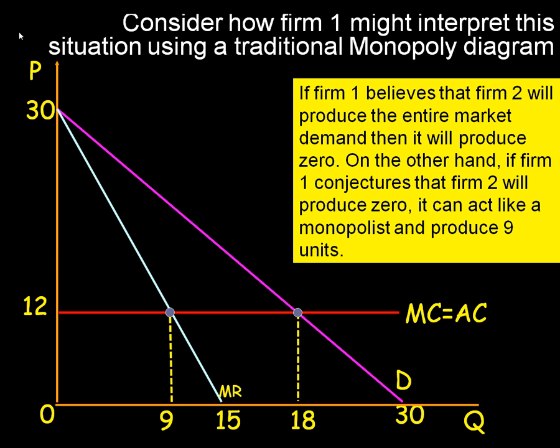We really ought to get an idea of how we might interpret this situation diagrammatically, and that's the purpose of this slide. Here I've drawn a traditional monopoly diagram, based upon how firm 1 might interpret the situation. Imagine you're firm 1, faced with a demand curve of price equal to 30 minus Q. On the vertical axis we have price at 30 when output is zero, and when price is zero the output is 30. Marginal cost is 12, so where price equals marginal cost — the competitive situation — we get output of 18.